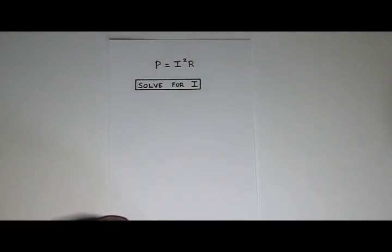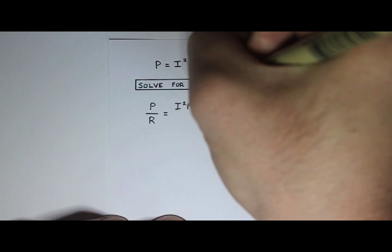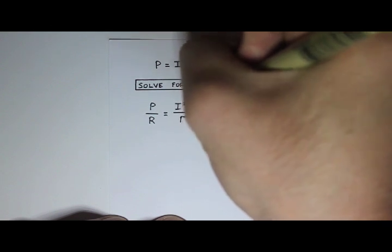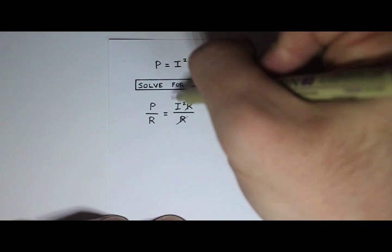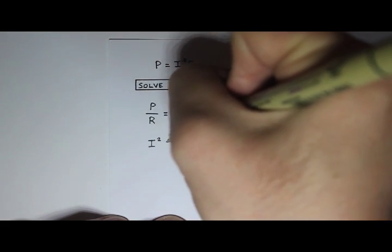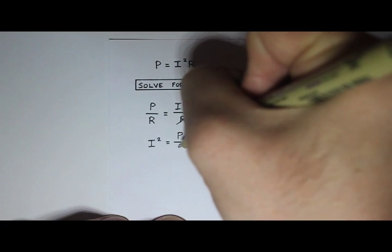So to get the i squared by itself, I want to divide both sides by r. So p divided by r equals i squared r divided by r. Cancel the r's. Then I get i squared equals p over r. I'm going to write the i squared on this side. i squared equals p divided by r.